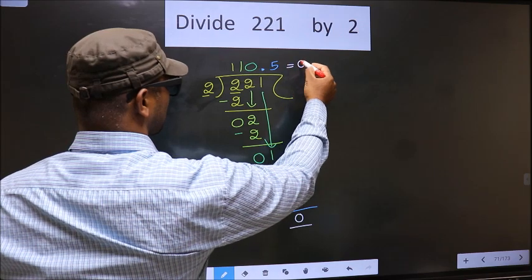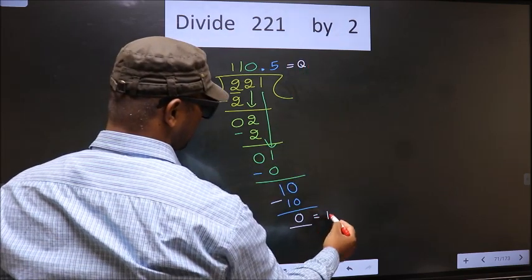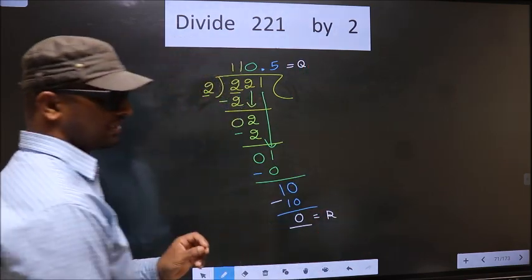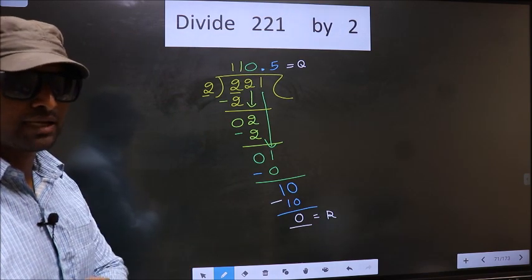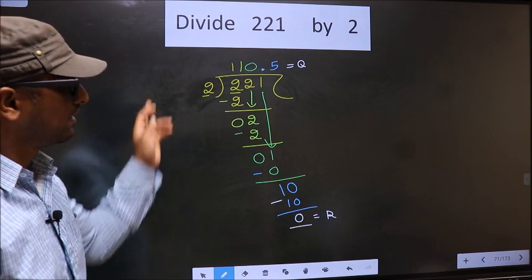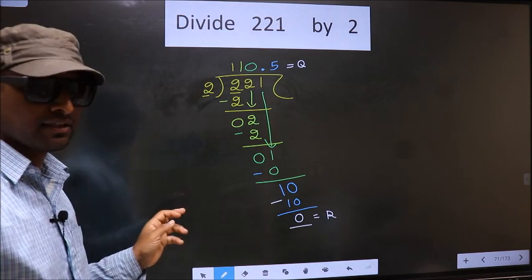So this is our quotient and this is our remainder. Did you understand where mistake happens? You should not do that mistake. Am I clear?